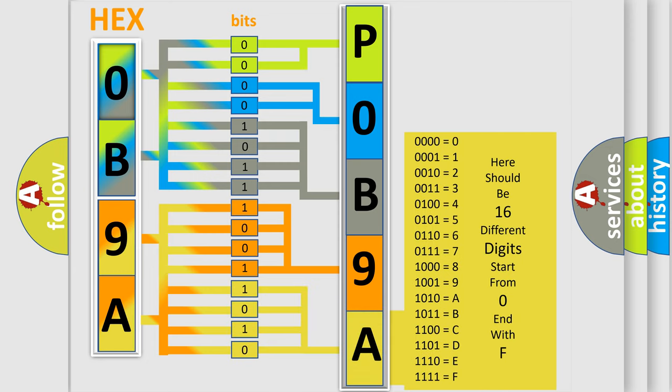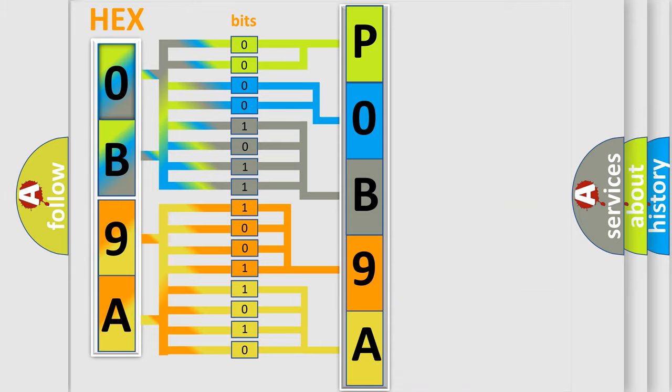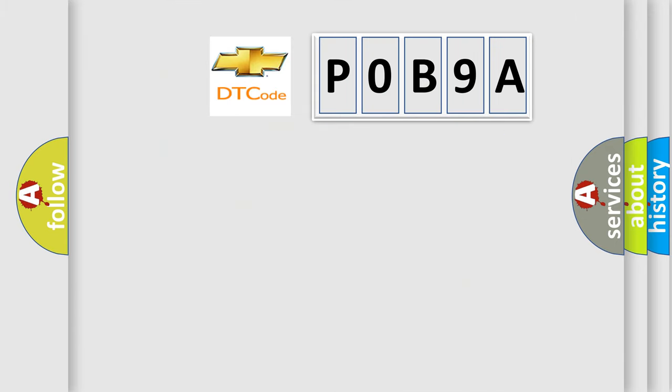We now know in what way the diagnostic tool translates the received information into a more comprehensible format. The number itself does not make sense to us if we cannot assign information about what it actually expresses. So, what does the diagnostic trouble code P0B9A interpret specifically for Chevrolet car manufacturers?